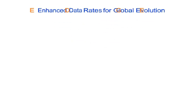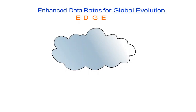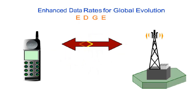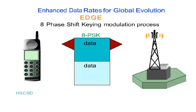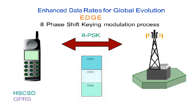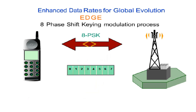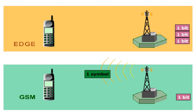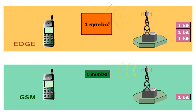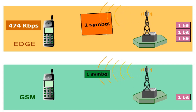Enhanced Data Rates for Global Evolution, EDGE, is a technology concentrating on the air interface between the mobile and the base station. Based on a new modulation process — eight-phase shift keying, or 8PSK — EDGE achieves three times the data rates of HSCSD and GPRS at the air interface. Furthermore, with EDGE, the subscriber can use all eight time slots at the air interface. In contrast to GSM, a digital data unit at the air interface, a symbol, is not just one bit but three bits. This technology allows data rates of almost 474 kilobits per second per user. However, EDGE is very bit error-sensitive and requires careful planning and a sufficient number of base stations.